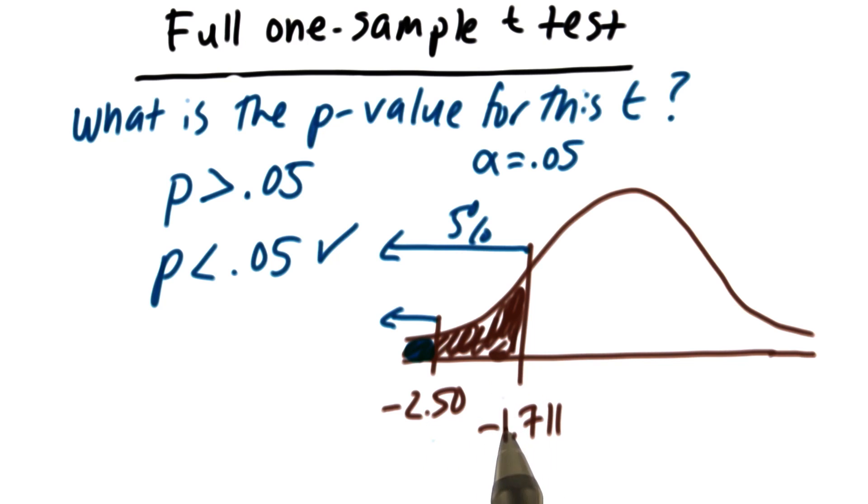So in this case the one-tailed p-value has to be smaller than 0.05 because this small chunk here is smaller than this chunk right here. So p has to be less than 0.05.